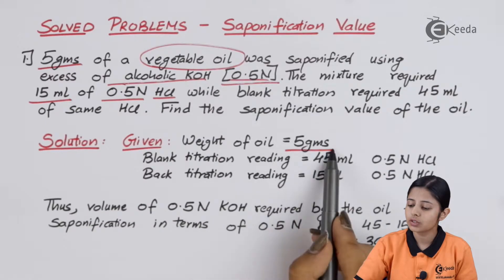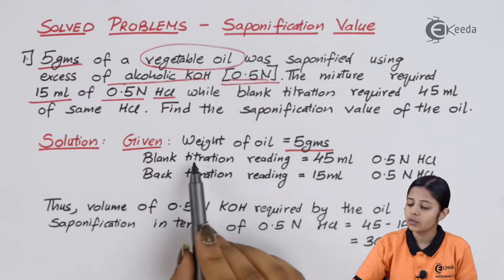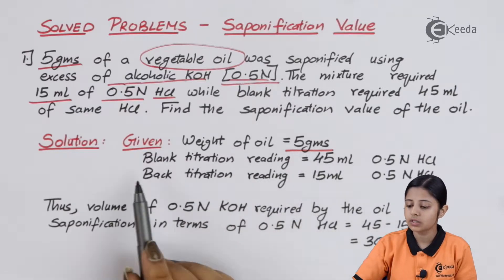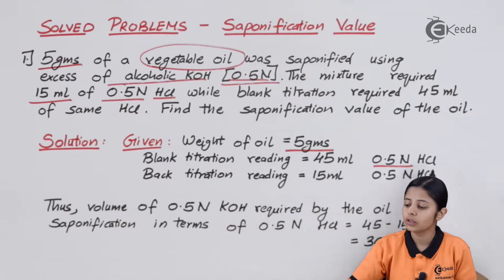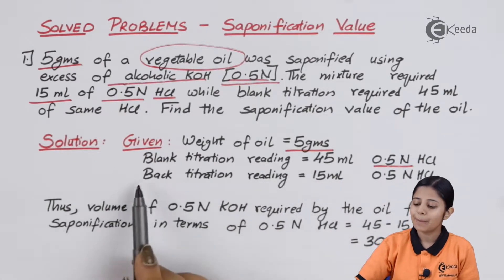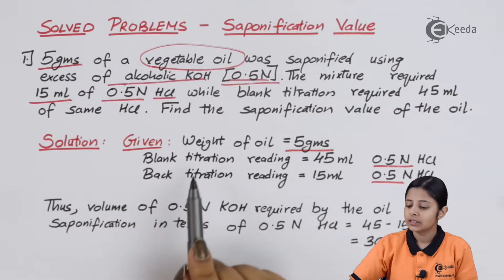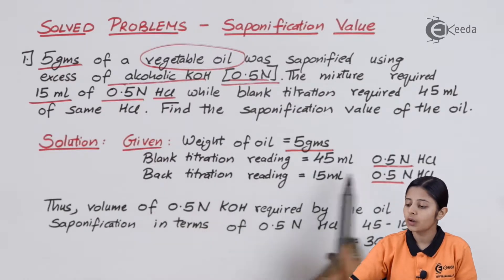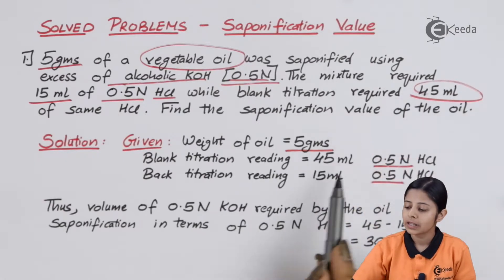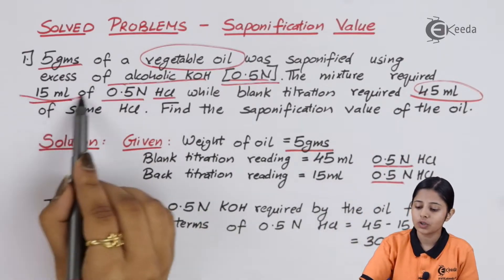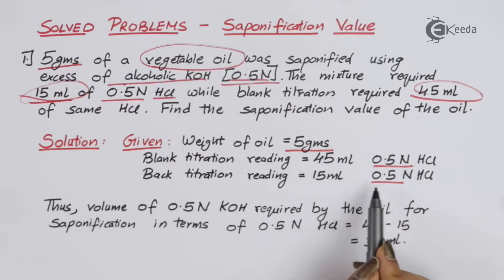Let us write what is given to us. The weight of the oil is 5 grams. Blank titration reading is 45 ml of 0.5 N HCl. Back titration reading is 15 ml of 0.5 N HCl. These are the two titration readings: 45 ml from the blank and 15 ml from the back titration, both at 0.5 N normality.